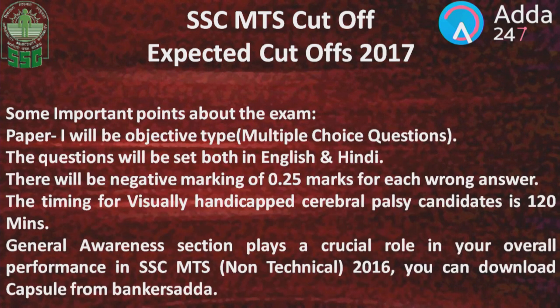Some important points for Paper 1: Paper 1 will be objective type, that is, multiple choice. The questions will be set both in English and Hindi. There will be negative marking of 0.25 marks for each wrong answer. The timing for visually handicapped and cerebral palsy candidates is 120 minutes. General Awareness section plays a crucial role in your overall performance in SSC MTS. You can download a capsule from Banga Sada.